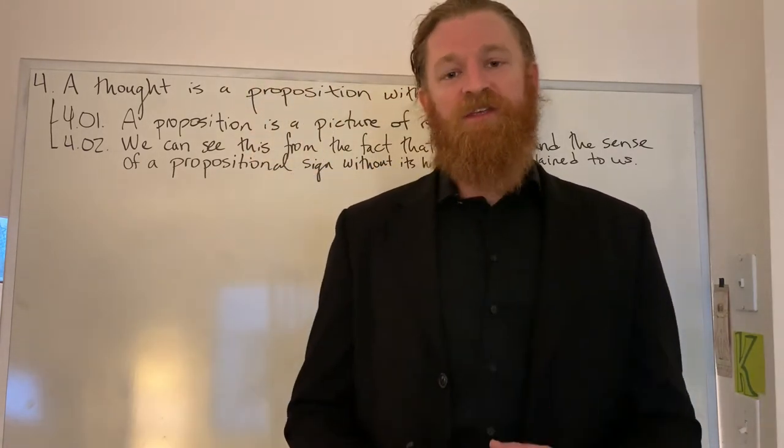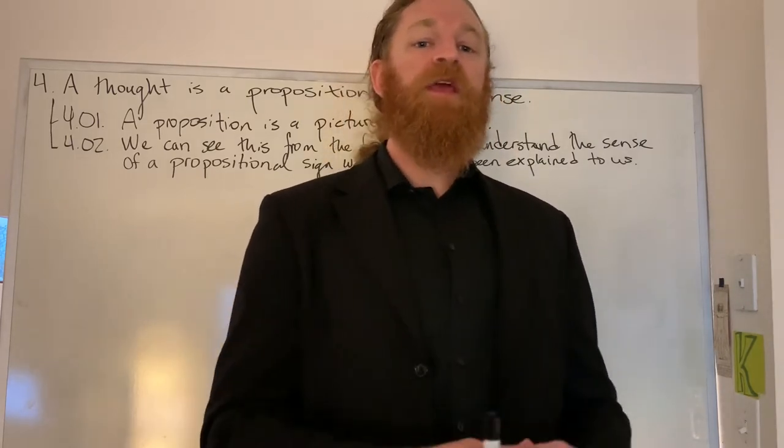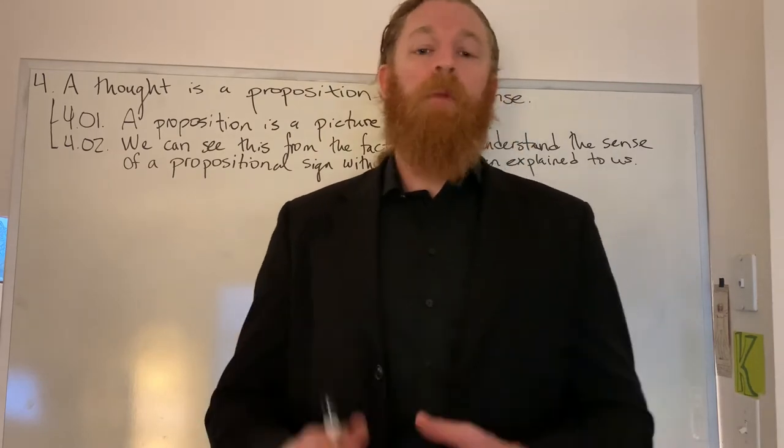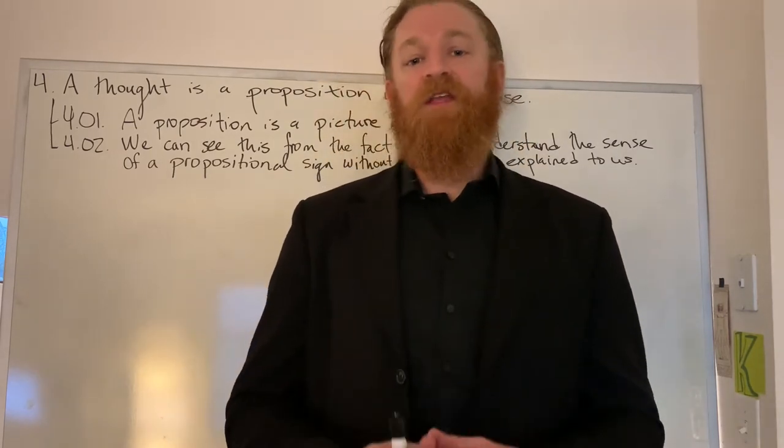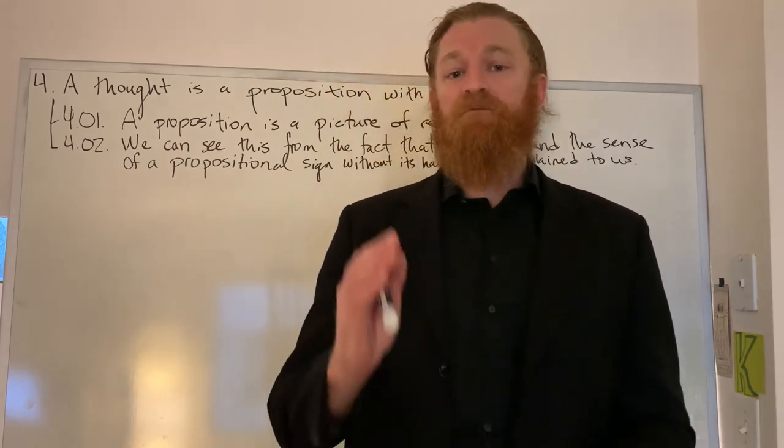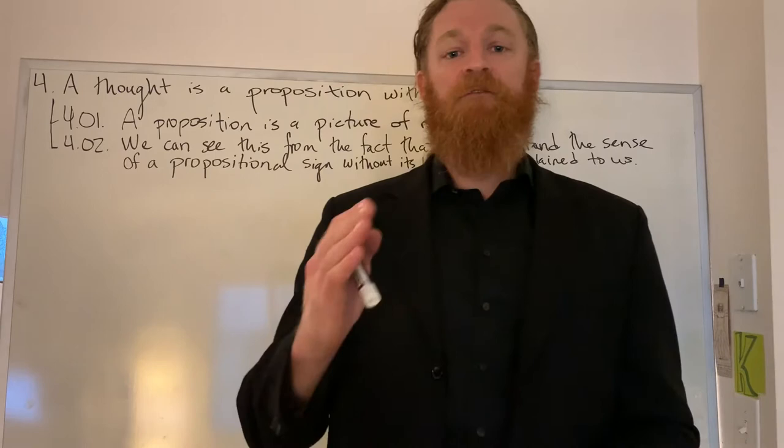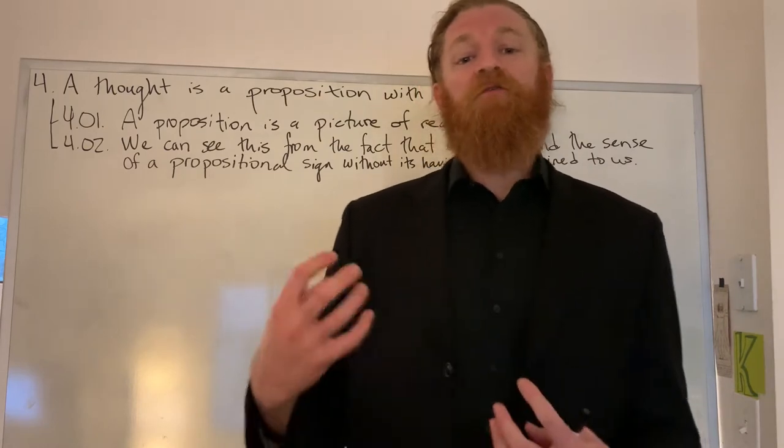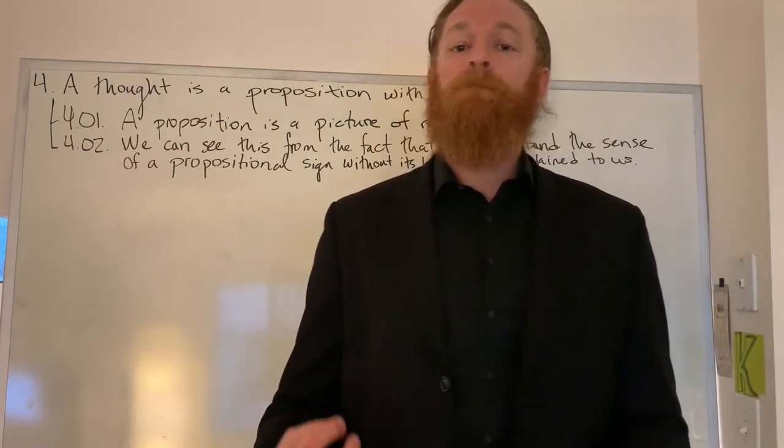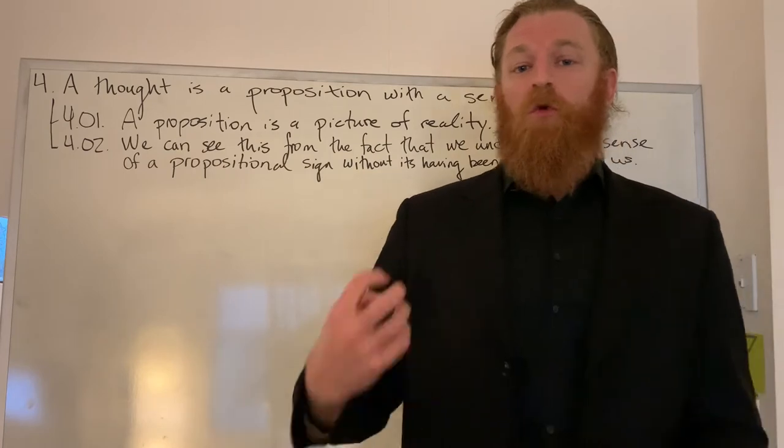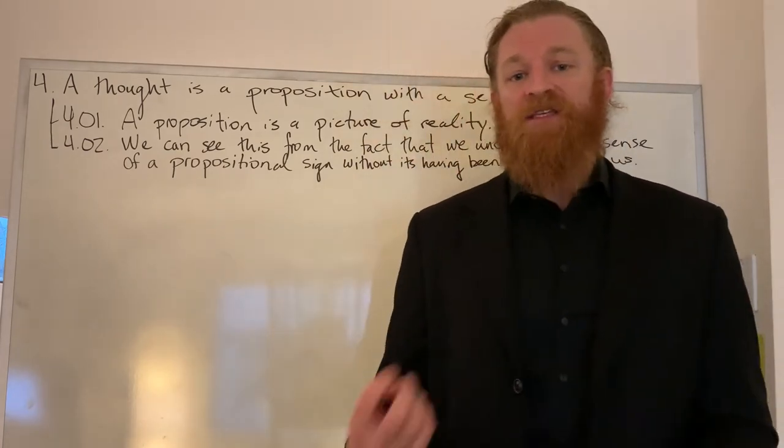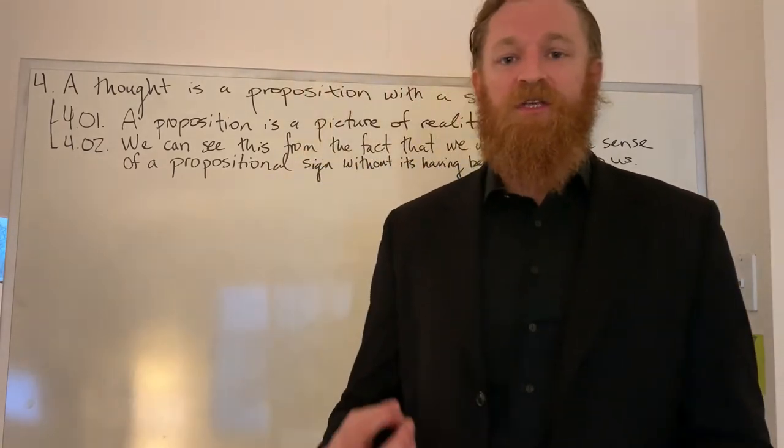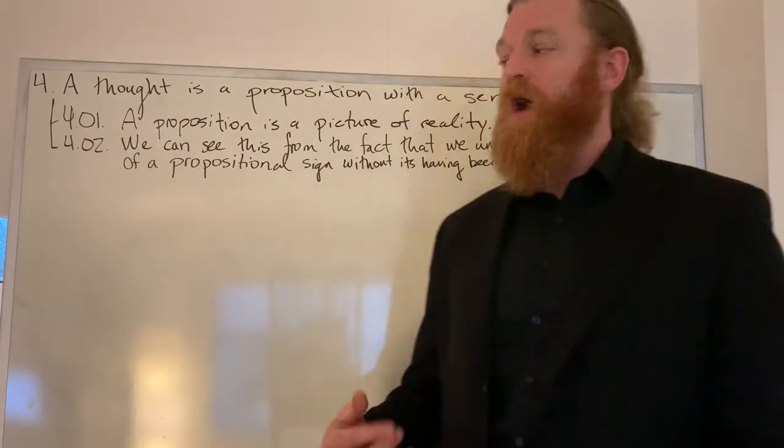Wittgenstein insists that the only way this is possible is because we know the meanings of the constituents of the proposition. So the meaning of a proposition must be determined by the meaning of its constituents. Another way to say this is the meaning of the whole proposition must be a function of the meaning of its parts. So the argument here is essentially this: we are capable of grasping the meaning of a novel proposition. If propositions weren't pictures of reality, if they didn't show what they said, then we would not be able to grasp the meaning of novel propositions. Therefore, propositions are pictures of reality.